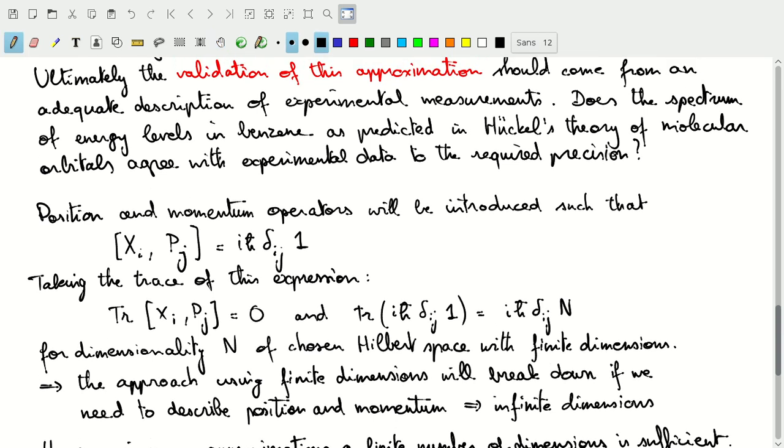Okay. Now, one difficult part of that, or one set of operators that will introduce difficulties here are the position and momentum operators. So, later on, we'll introduce position and momentum operators through their commutators. And so, the commutator of the position operator in one direction i, or one coordinate i, and the momentum operator in a coordinate j, is i h bar times delta i j, and then the identity operator.